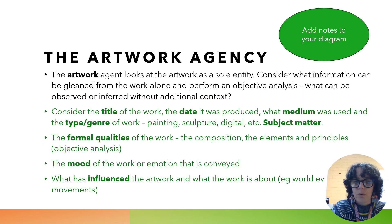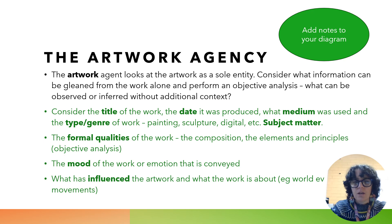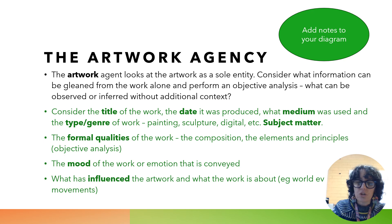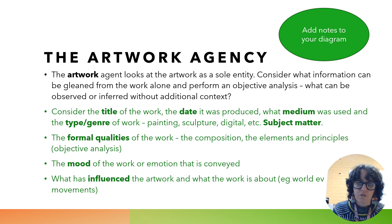The first is the artwork agency. We're going to look at the artwork as its own entity — consider it existing all by itself — and perform an objective analysis, which is looking at what we can observe or infer without knowing extra context around the creation of that work. Key things to consider: first, the title of the work, which can give us clues as to the subject matter, the intention, the meaning. We also want to look at the date the artwork was produced — that tells us what kind of world it was produced in. We know that the world in 1555 was very different to the world in 2023.